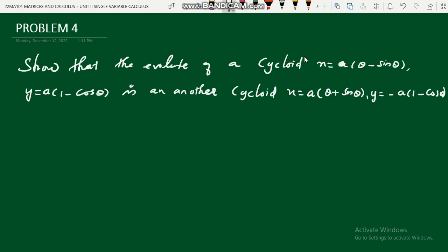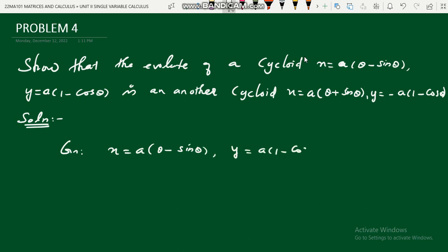To find the evolute of any curve we need the parametric equations. In the cycloid we have only the parametric form — there is no Cartesian form. So take the given parametric form: x = a(θ − sinθ) and y = a(1 − cosθ).